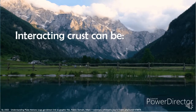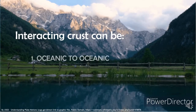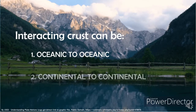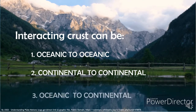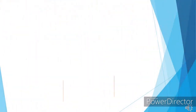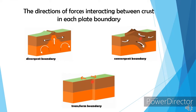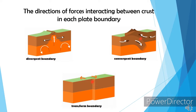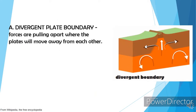Interacting crust can be: 1. Oceanic-to-oceanic, 2. Continental-to-continental, and 3. Oceanic-to-continental. In a divergent plate boundary, forces are pulling apart where the plates will move away from each other. Interacting crust can be oceanic-to-oceanic and continental-to-continental.